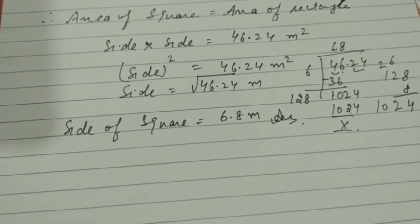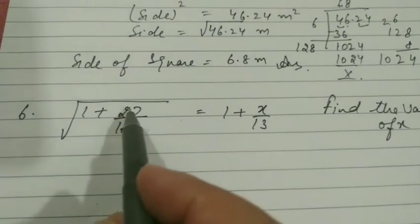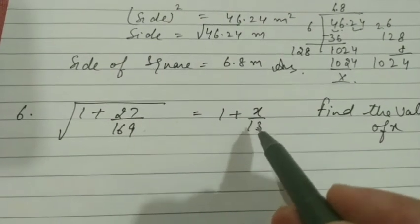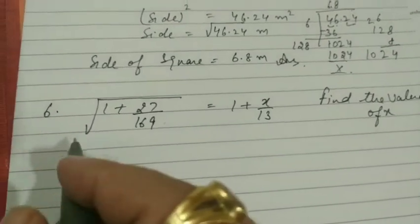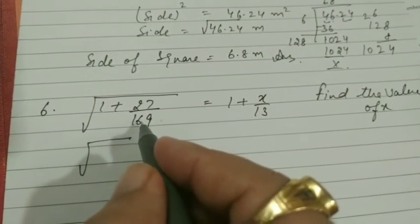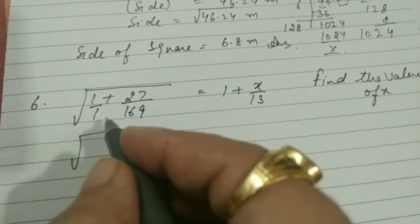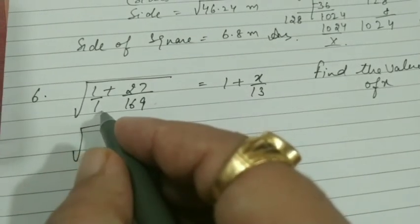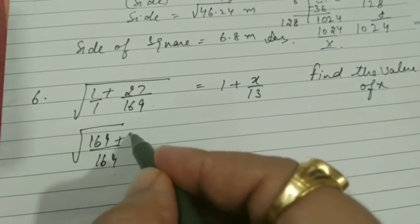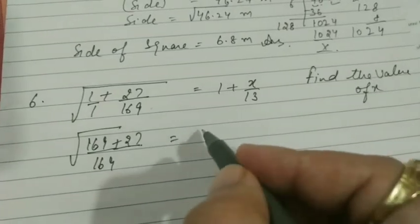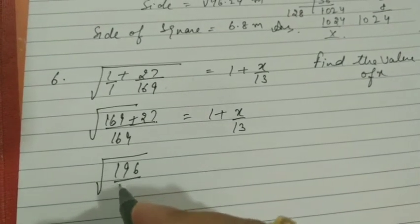Now question number 6. Question number 6: the square root of (1 + 26/169) is equal to 1 + x/16. Find the value of x. We need to simplify the left side: 169 + 26 = 195... actually 169 + 27 = 196 divided by 169. So we have √(196/169).